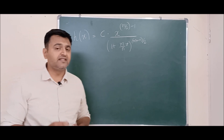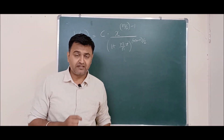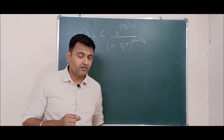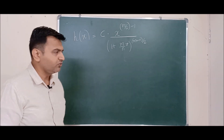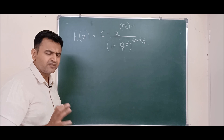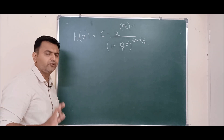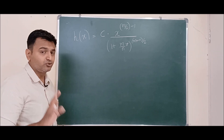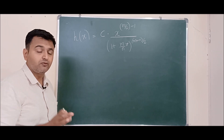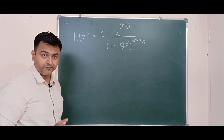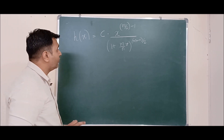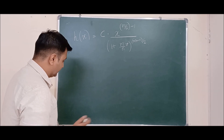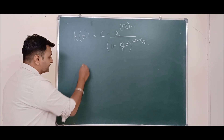The PDF is defined for X greater than 0, and is 0 for X less than 0. There is no need to memorize this because we are going to use the table to solve problems involving F distribution.